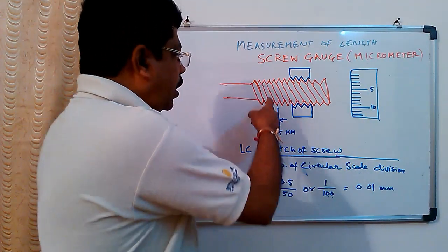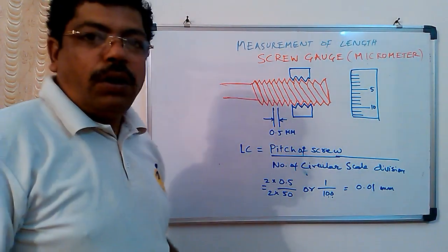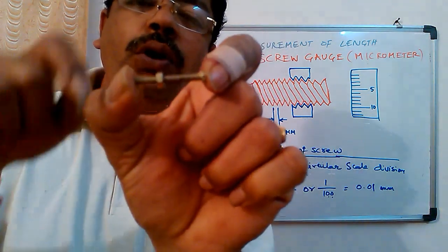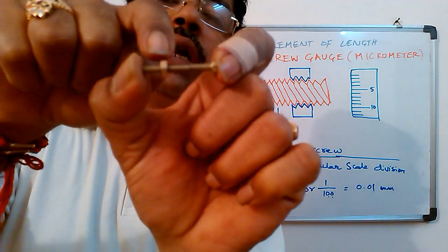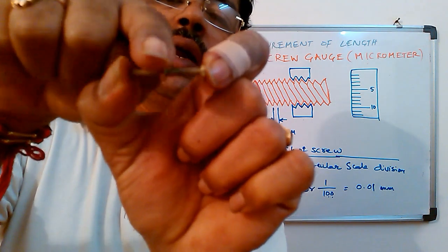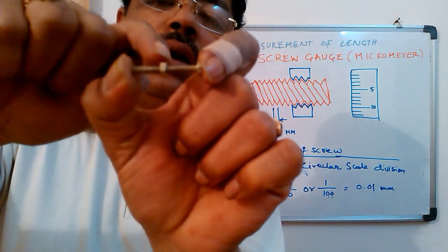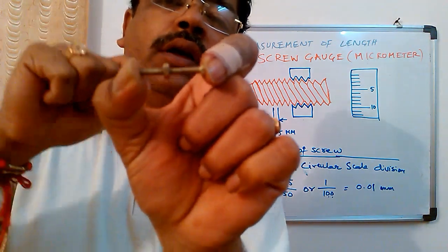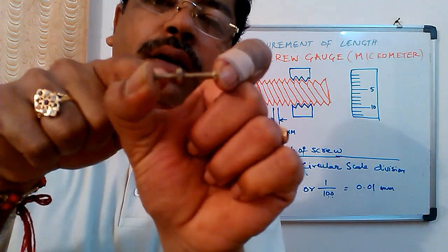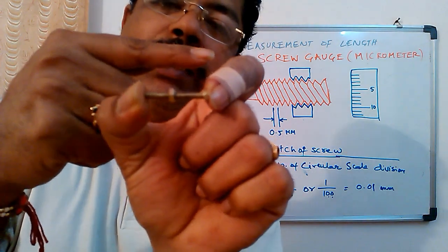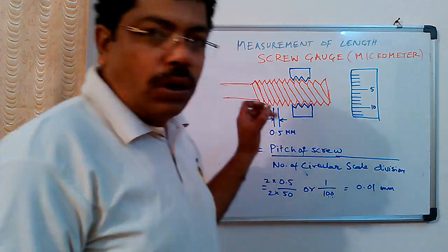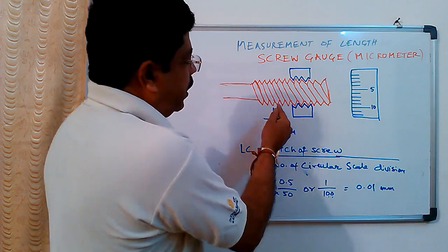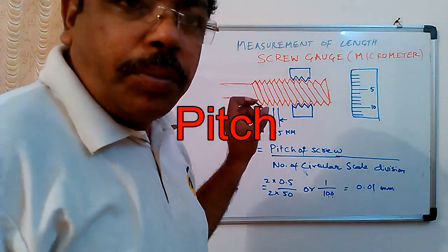So imagine this is a screw and I will show you practically - this is a screw and this is a nut. If you turn this nut it is moving either to left or to right depending upon the rotation. If it is clockwise it is moving forward, if it is anti-clockwise it is moving backward. Now I will use this principle of nut being moved in one direction as my measurement. What happens is the gap between one thread to another thread is called pitch, P-I-T-C-H.